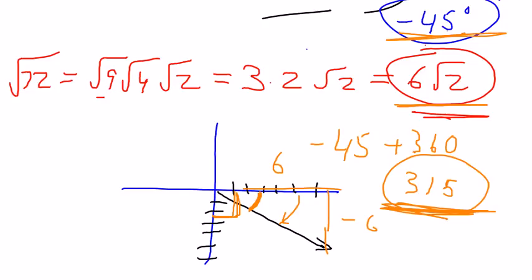Okay, so we have negative 45 degrees and a magnitude of 6 square root of 2.